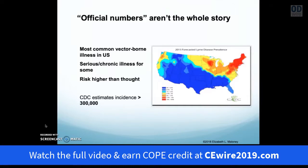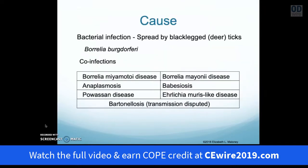Tick-borne disease is one of the most common vector-borne illnesses in the US. It is often caused by a bacterial infection spread by black-legged deer ticks, also known as Borrelia burgdorferi. Often tick-borne disease can also present with other co-infections, some of the most common being Bartonella, Babesia, and Ehrlichia.